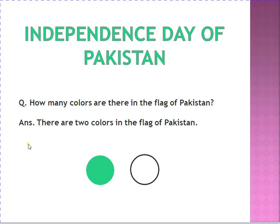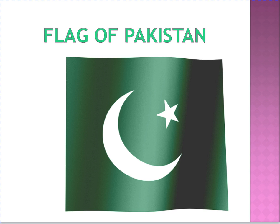The answer is there are two colours. Raise your two fingers in the air. Two colours in the flag of Pakistan. This is the flag of Pakistan — it has two colours. You can see easily: white and green.